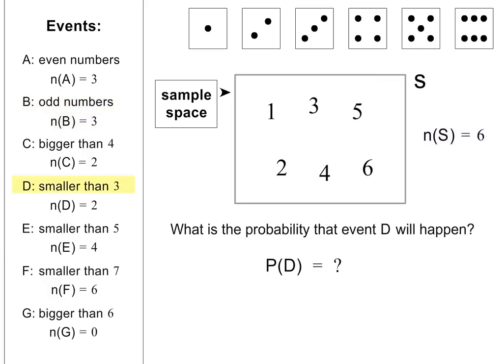What is the probability of getting a number smaller than 3 when rolling a die? To calculate this, we need to divide N(D) by N(S). N(D) equals 2 and N(S) equals 6. The probability is therefore 2 out of 6, or 1 third.